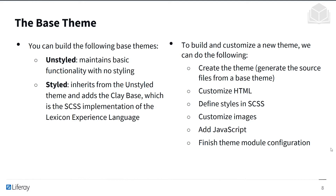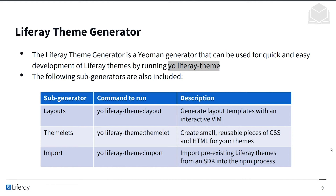To build and customize a new theme, we create it by generating source from a base theme — either unstyled or styled — then customize the HTML, define styles in SCSS (font size, font color, font choice), customize images, add JavaScript, and finish the theme module configuration. To build a theme, we use the Liferay Theme Generator, a Yeoman generator for quick and easy development run via yo liferay-theme. There are also sub-generators for layouts, themelets, and import. You can generate layout templates, create small reusable CSS pieces called themelets, or import pre-existing Liferay themes from an SDK into the NPM process.